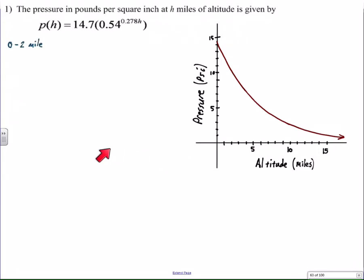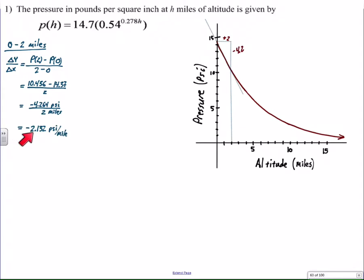The next thing I'm going to do is I'm going to calculate the specific rates that were asked for from zero to two miles. I use my average rate of change algorithm, and I find that we have a decrease of two pounds per square inch approximately for every mile increase in altitude. So that's represented here. Two miles increase, 4.2 drop in atmospheric pressure. And so that's the first piece.